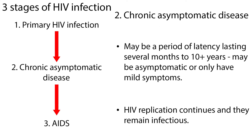Following the primary phase, there may be a period of latency lasting several months to 10 or more years. The patient may be completely asymptomatic or only have mild symptoms. However, HIV replication continues and they remain infectious.